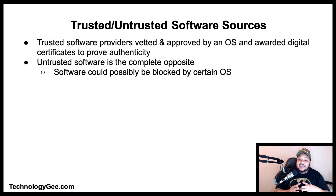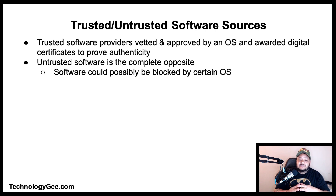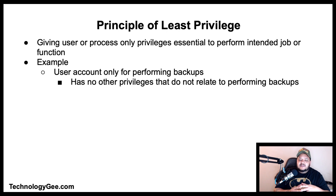Trusted software sources are software providers that have been vetted and approved by an operating system and awarded digital certificates to prove their authenticity. Untrusted software sources are the complete opposite, and the installation of untrusted software could possibly be blocked by certain operating systems. Finally, we have the principle of least privilege, which requires that every module — such as a process, a user, or a program — must be able to access only the information and resources necessary for a legitimate purpose.